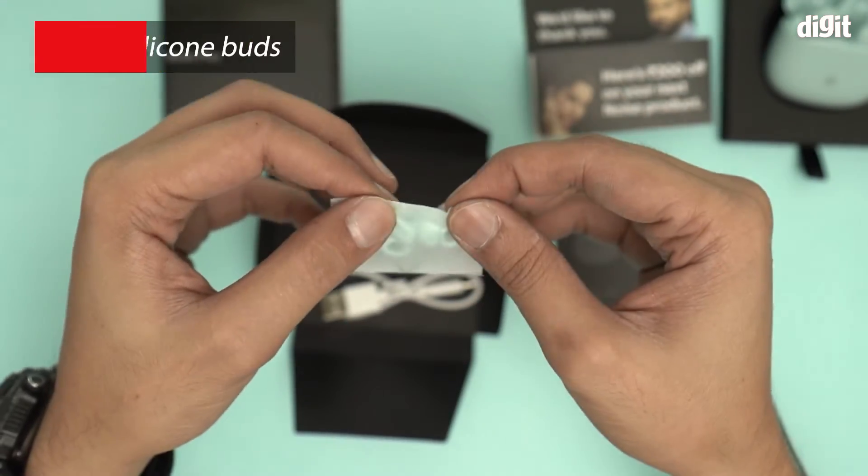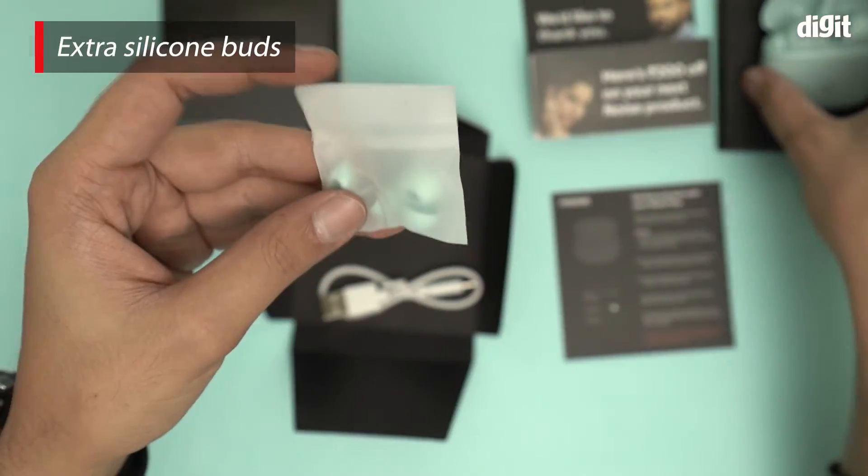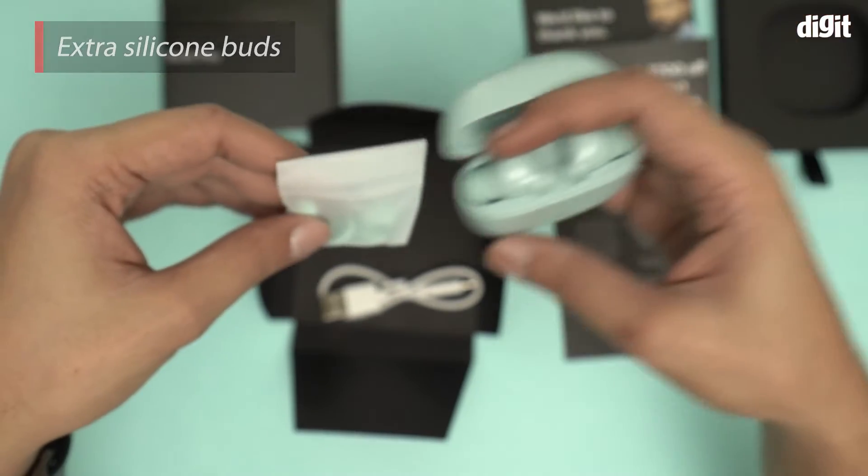These are extra silicone tips, four of them, large and small. The medium ones are attached to the earphones themselves. Leave them here.